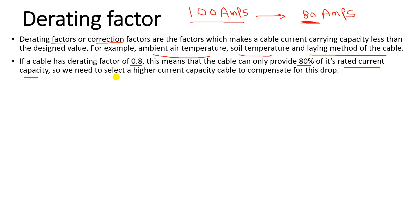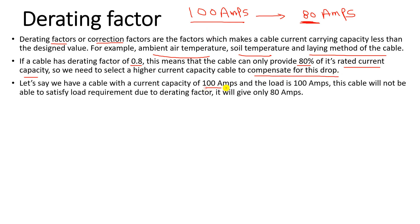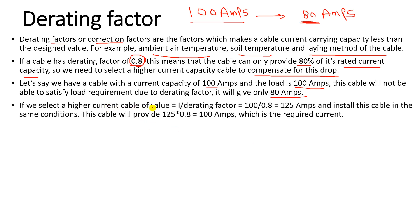To compensate for this drop, we need to select a cable with a higher current carrying capacity. For example, if our load is 100 amperes and the derating factor is 0.8, a 100-ampere rated cable will not satisfy the load — it will only deliver 80 amperes. We must select a cable with a higher rated current, calculated as: required current divided by the derating factor.